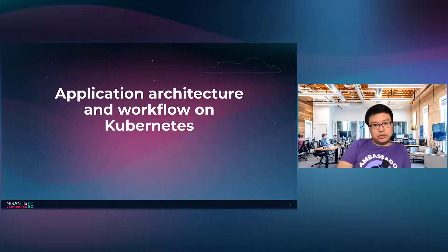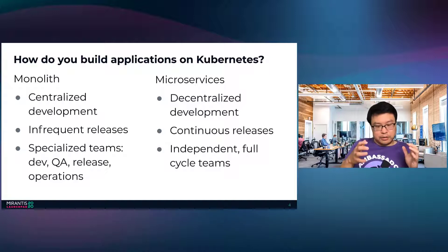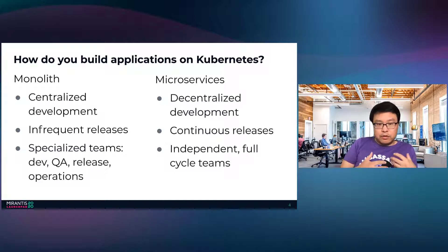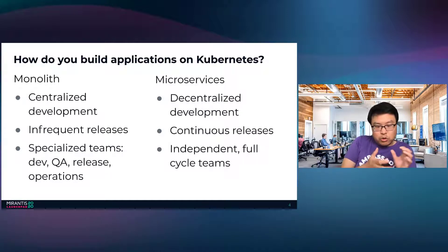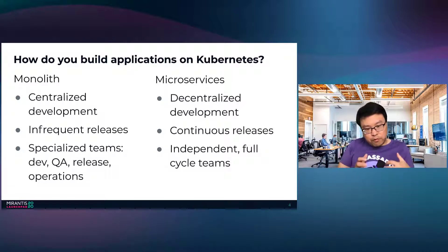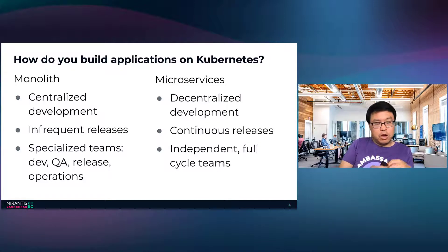I want to start by talking about application architecture and workflow on Kubernetes and how applications built on Kubernetes really differ from how they used to be built. The traditional architecture is the very famous monolith — one giant piece of software that you build, deploy, and run. The value of a monolith is it's really simple. With a monolith, you have a very centralized development process. You tend not to release too frequently because you have different development teams working on different features, and everyone works towards a shared release train. You have specialized teams: a development team, a QA team, a release team, and an operations team.